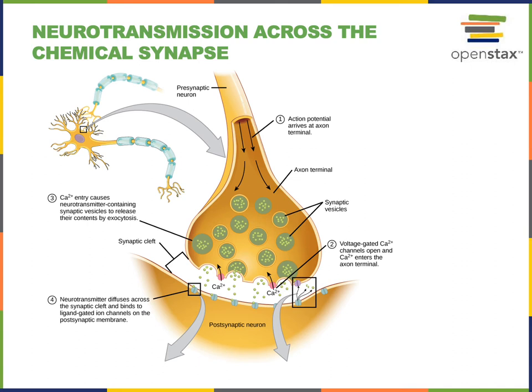These neurotransmitter receptors can be ligand-gated ion channels that will cause graded potentials in the postsynaptic cell.